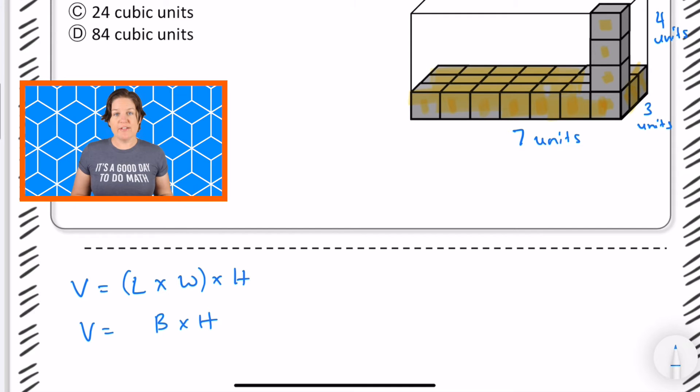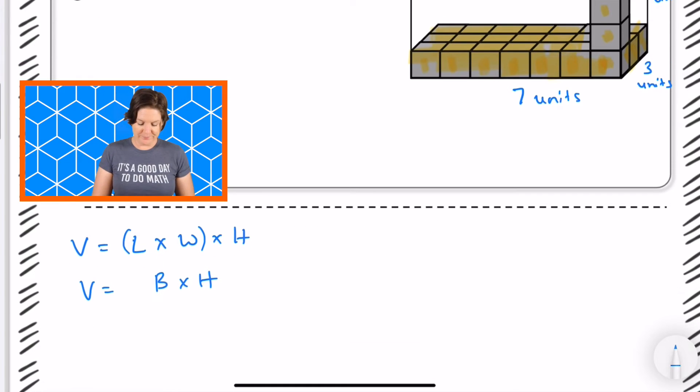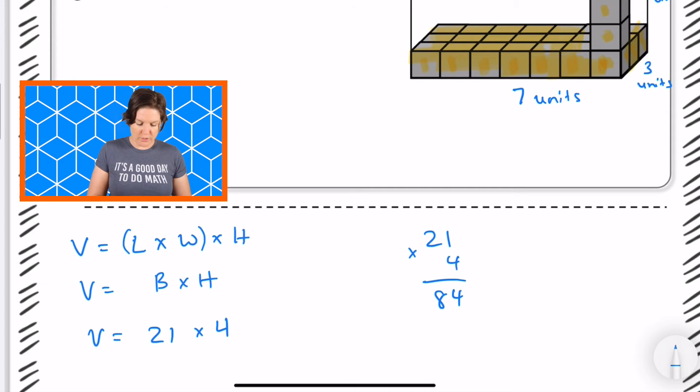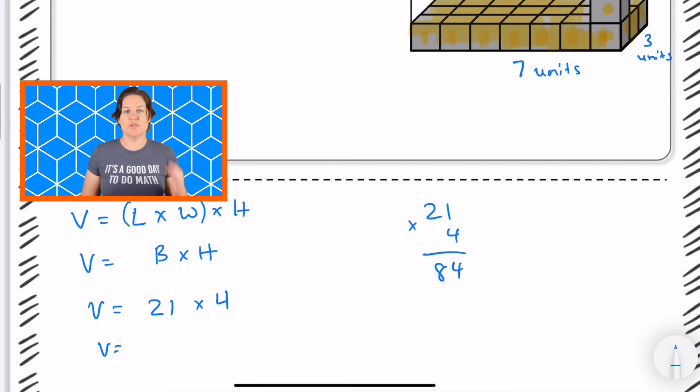So I know that seven times three will equal my base. Seven times three is what? 21 times our height of four units. So if I do this right over here that would be 84 cubic units because we have three different dimensions there. So 84 cubic units.